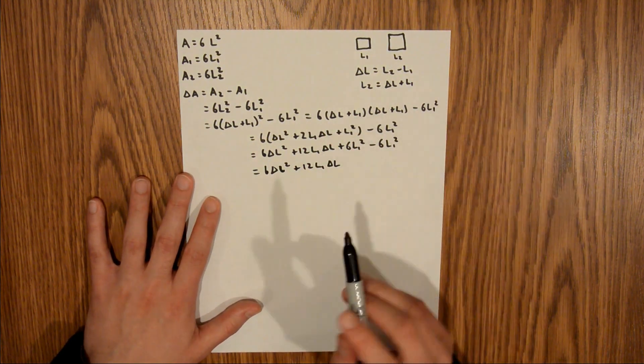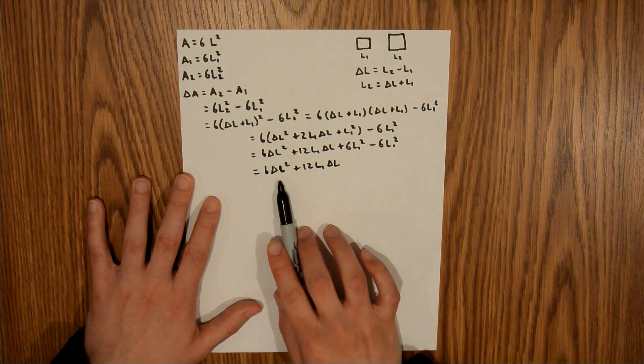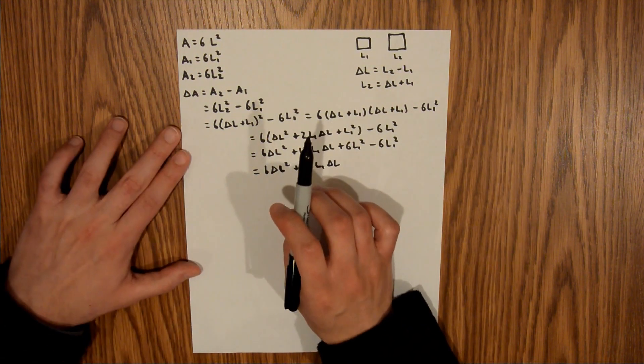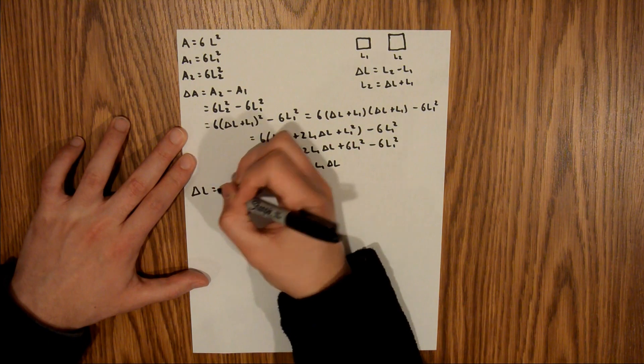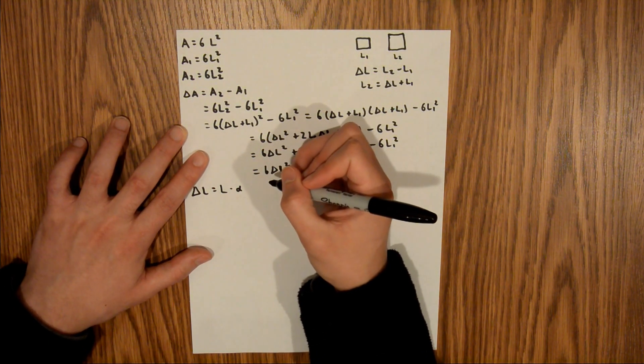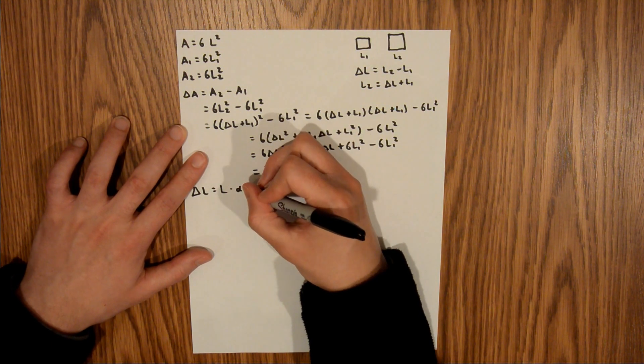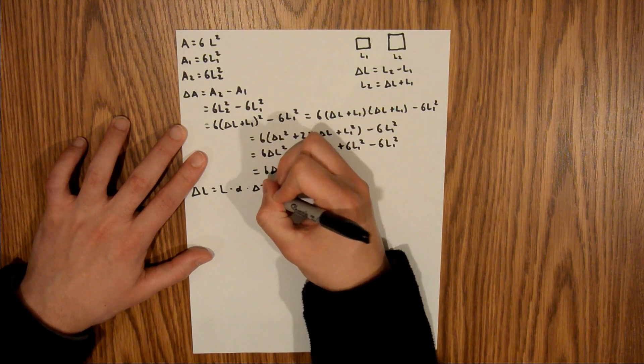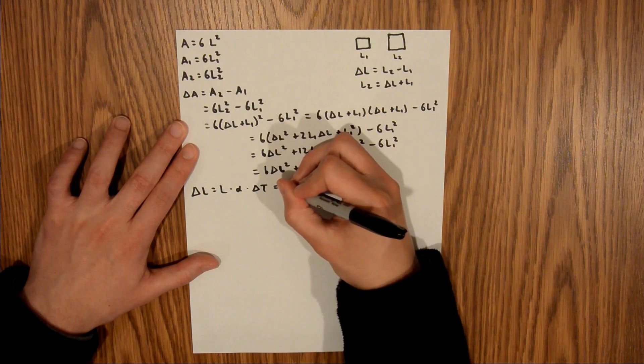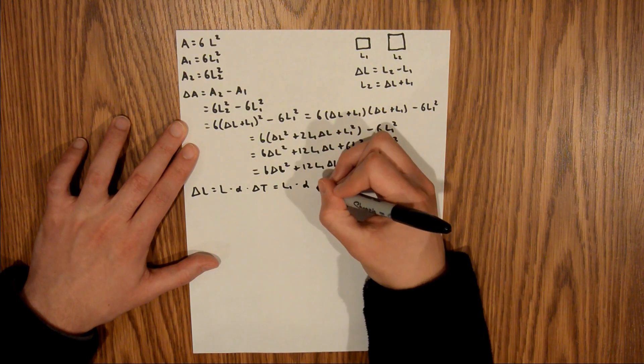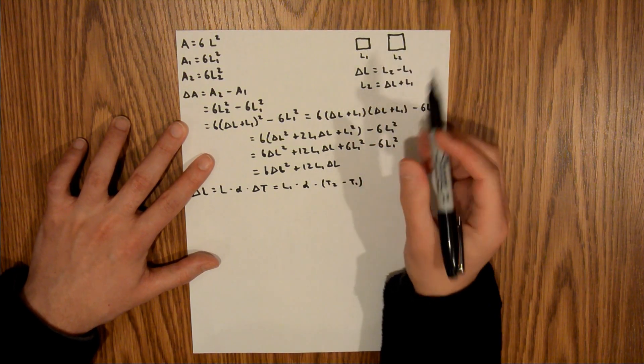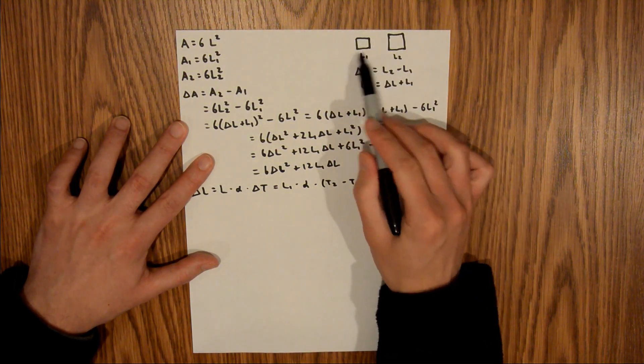We know L1, but we're not told what delta L is. But we can solve for it using a linear expansion equation. Delta L is equal to the length times a coefficient of linear expansion, which is characteristic of the material, times a change in temperature. This length is the length we started with, which is L1. So this is L1 times alpha times our change in temperature, T2 minus T1.